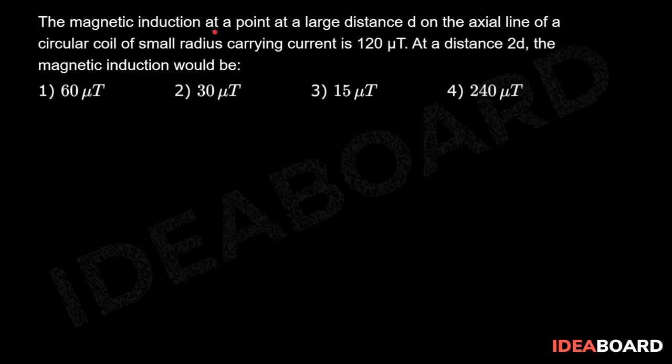The magnetic induction at a large distance d on the axial line of a circular coil of small radius carrying current is 120 microtesla. At a distance 2d, the magnetic induction would be: